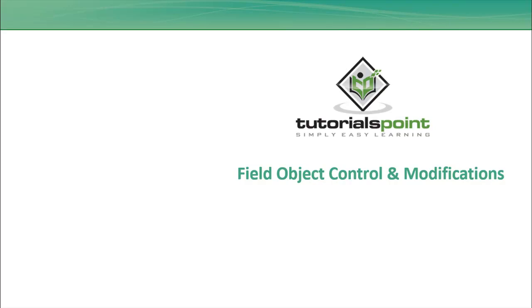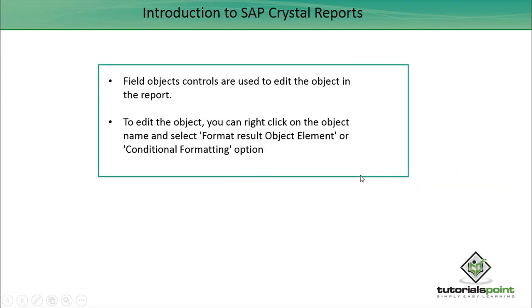Welcome to Tutorials Point. In this tutorial we will discuss about the field object controls and how we can do modifications to field objects in the Crystal Report designer. Field object controls are used to edit objects in the report. To edit an object you can right-click the selected object and click on Format Object, or you can also do conditional formatting in SAP Crystal Reports.